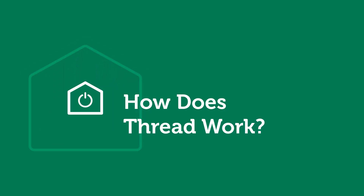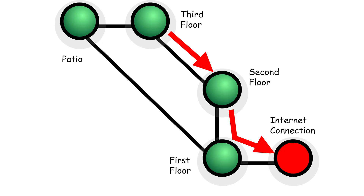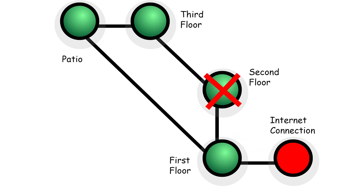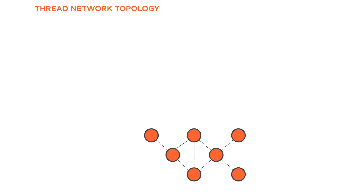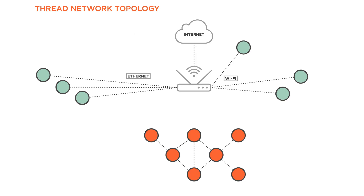How does Thread work? Thread creates a self-healing mesh network where devices communicate directly with their neighbors. In a true mesh, if one device goes offline, data simply reroutes through another path. There's no single point of failure and there's no central hub required to keep the basic mesh functioning. But a mesh network by itself isn't very useful — it still needs a way to talk to the outside world, especially to user-facing devices like smartphones, computers, or cloud-connected automation systems. In practice, any functional Thread network requires at least one gateway or router to bridge the mesh to your broader home network.